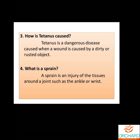Fourth short answer: what is a sprain? In Tamil we say 'sulukkha.' A sprain is an injury of the tissues around a joint, such as ankle or wrist. Sprain will mostly happen on all joints.